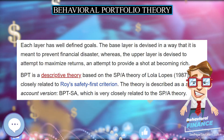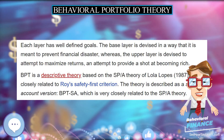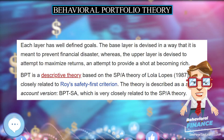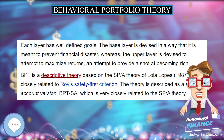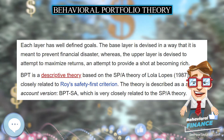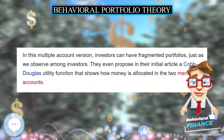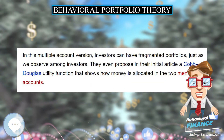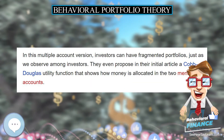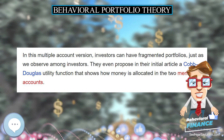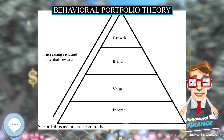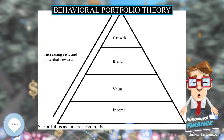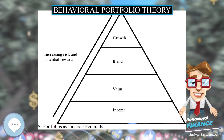In the multiple-account version, investors can have fragmented portfolios, just as we observe among real investors. The authors even propose in their initial article a Cobb-Douglas utility function that shows how money is allocated across the two mental accounts.